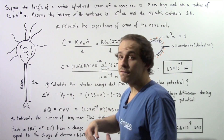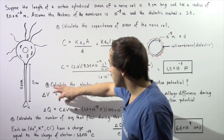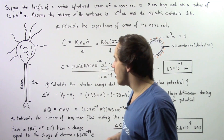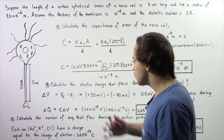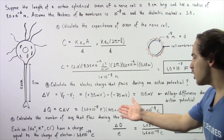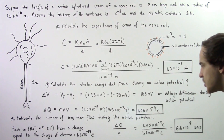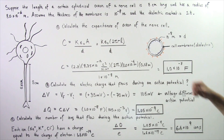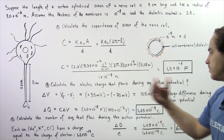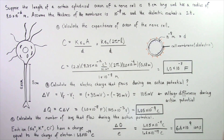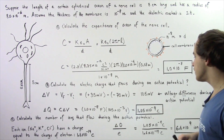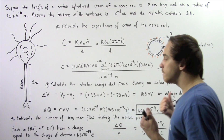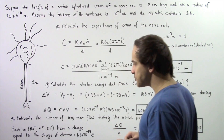We can now use the equation ΔQ = C × ΔV to calculate the flow of charge. The change in voltage is 105 times 10 to the negative 3 volts, and the capacitance from Part A is 1 times 10 to the negative 8 farads. Multiplying these two quantities gives us about 1.05 times 10 to the negative 9 coulombs — that's how much charge flows during an action potential.